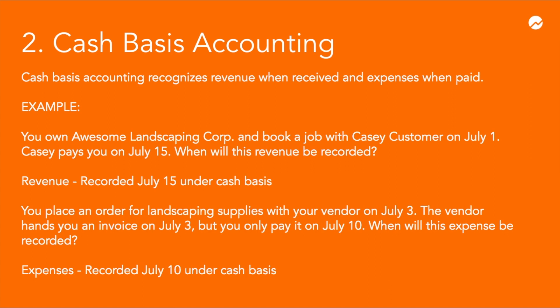You also place an order for landscaping supplies with your vendor on July 3rd. The vendor hands you an invoice that same day, July 3rd, but you only pay it on July 10th. Under cash basis accounting, the expense will be recorded on July 10th because that's when you actually paid the invoice.